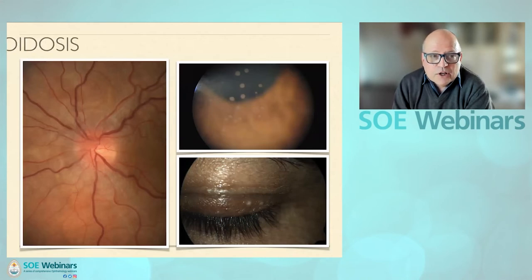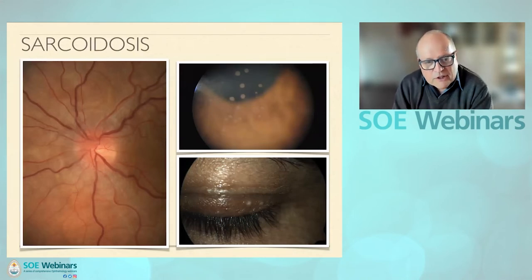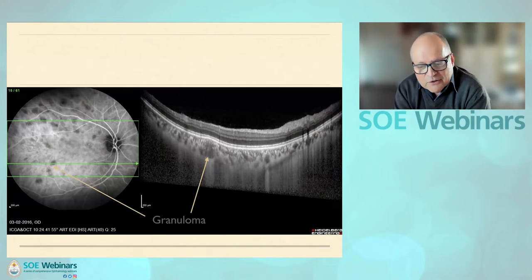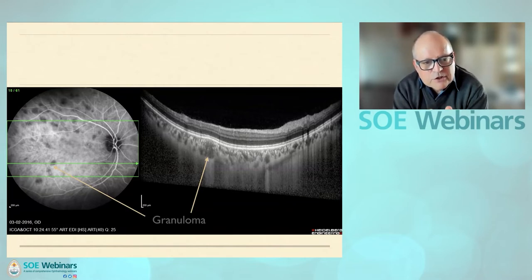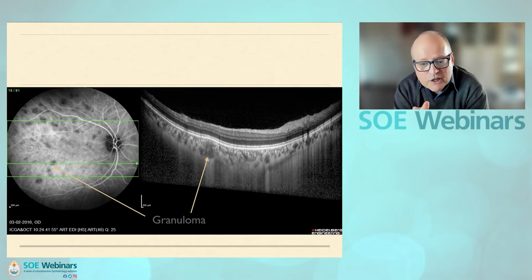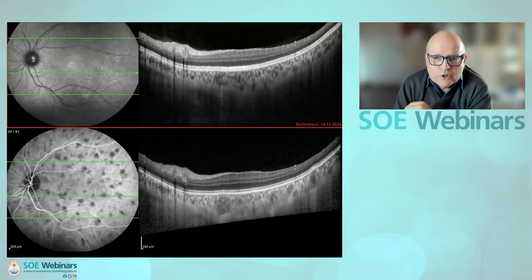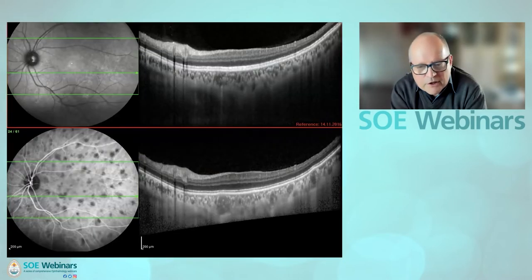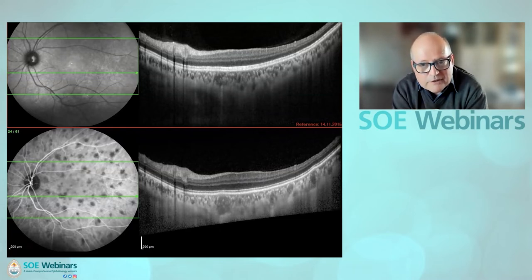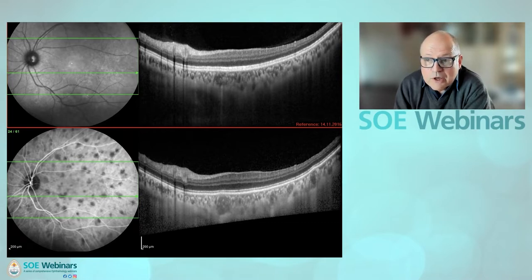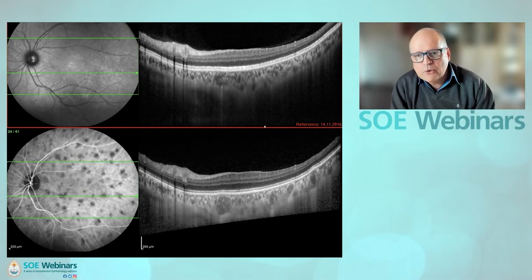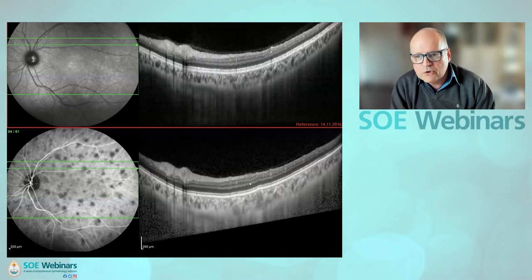Sarcoidosis is recognizable here — very often it involves the retina leading to typical candle wax drippings, but this case involves mainly the choroid. ICG is a very good way to define the choroidal involvement: granulomas seen on enhanced depth imaging with retinal indentation. Over six months, the granuloma progressively disappears — significantly decreased and another granuloma nearly completely gone several months later.